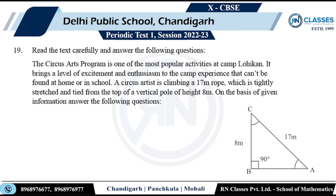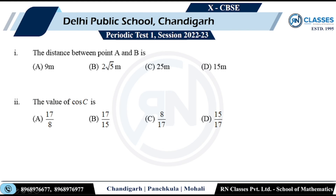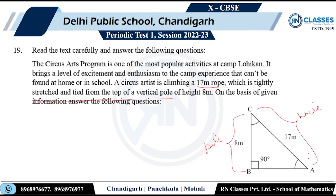Question 22 (Case Study): A circus artist is climbing a 17-metre rope tied from the top of a vertical pole. On the basis of this information, answer the following. First, find the distance between point A and point B. Using the Pythagorean triple — 8, 15, 17 — the missing side is 15. Option D is correct.